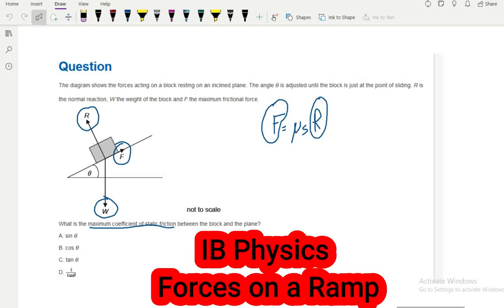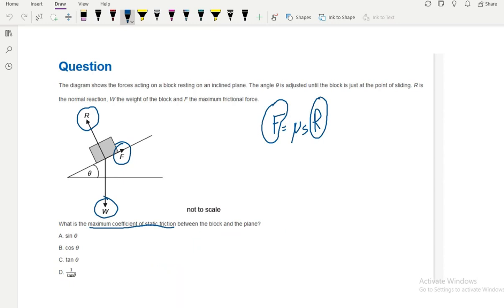Hello, this is an IB physics question about mechanics. So here we have an object where we have three forces acting on it: friction, the weight, and the normal force. And we're looking for the maximum coefficient of static friction.